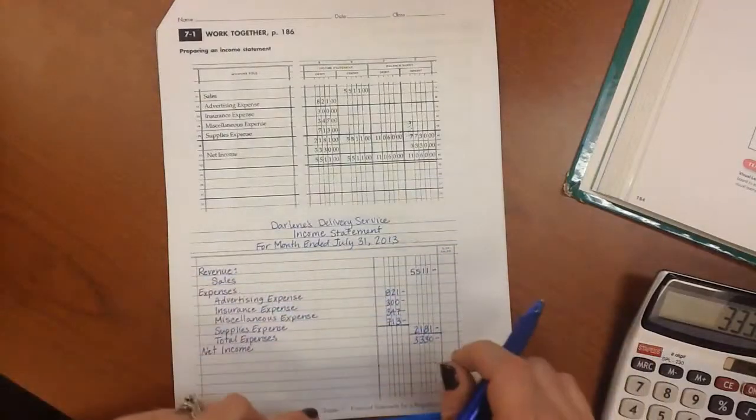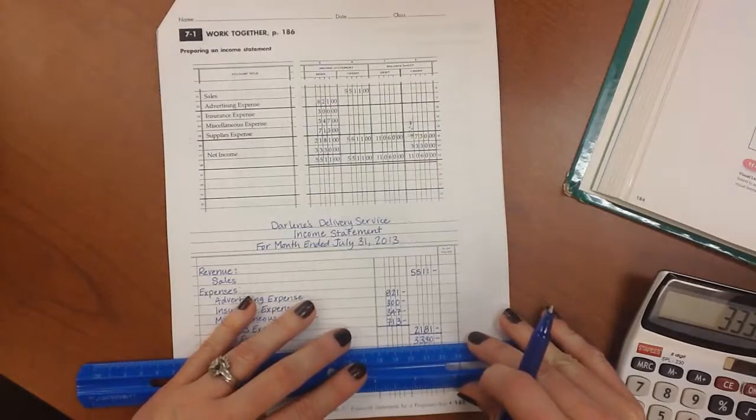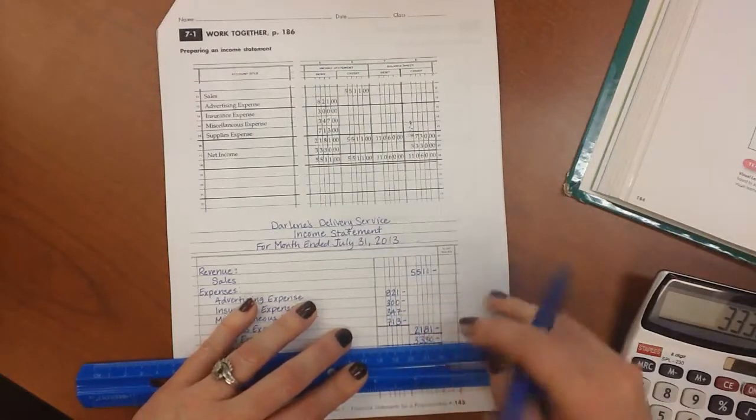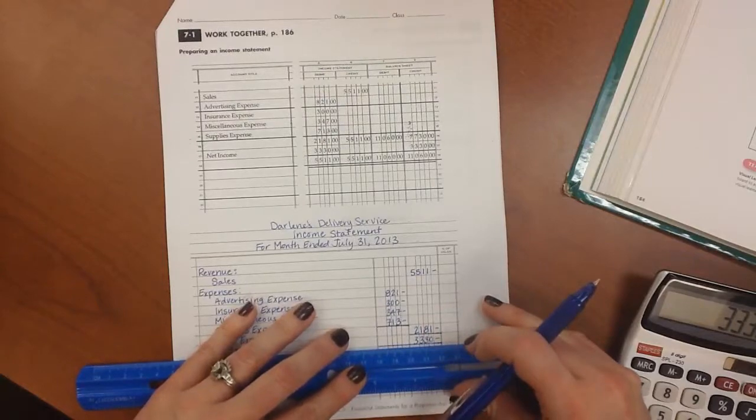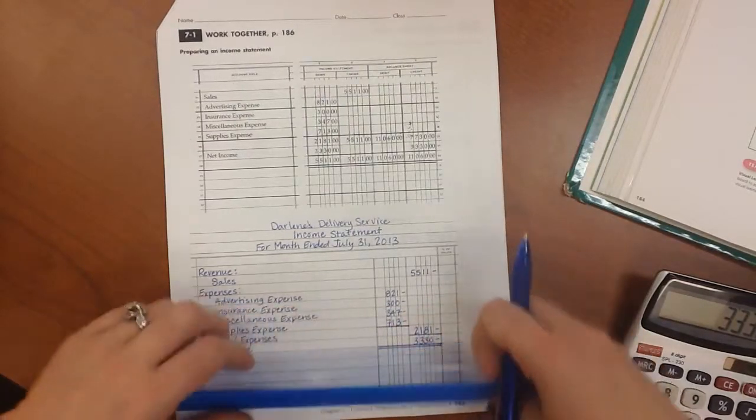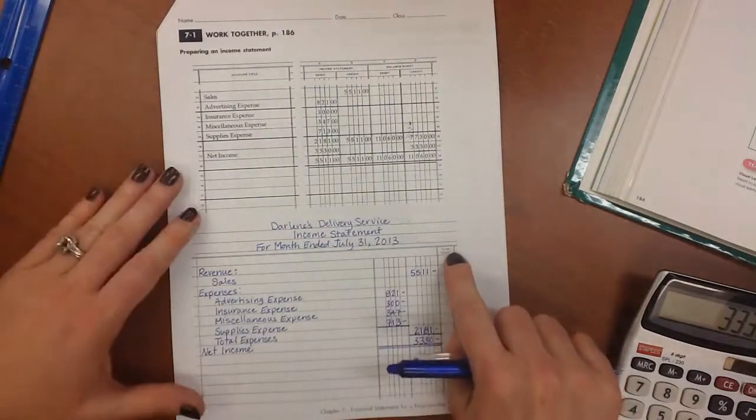And if our math looks correct, we are going to double rule under both of these columns to state that we know that there are no mistakes in either column based on our math that we came up with. And then our last step to finish this document is to figure our component percentages.